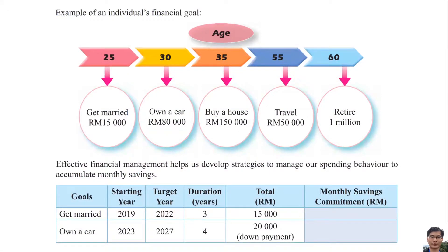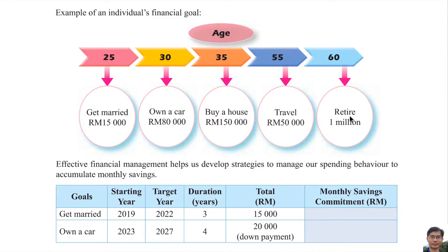The following is an example of an individual's financial goals. At age 25, he needs 15,000 ringgit to get married. At age 30, he wants to own a car priced at 80,000 ringgit. At age 35, he wants to buy a house which costs 150,000 ringgit. At age 55, he wants to use 50,000 ringgit to travel. At age 60, he wants to have one million ringgit for retirement.